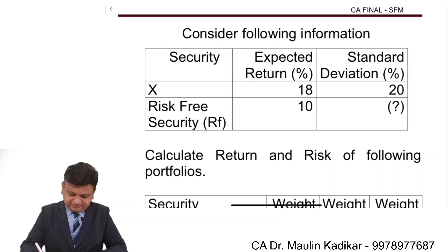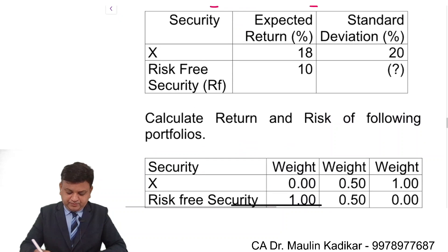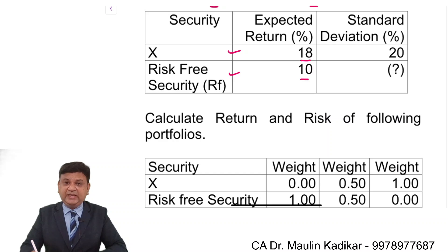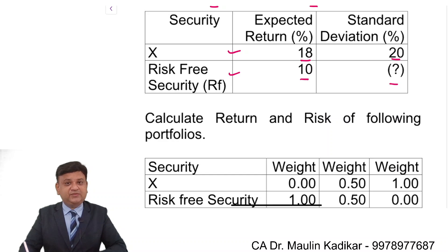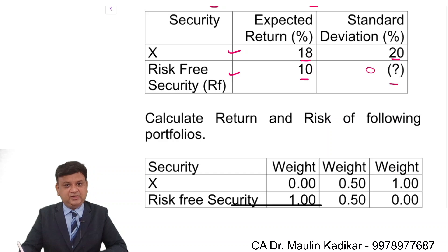Let us see the next question. Consider the following information given about security X and the risk-free rate of return. Returns are provided as 18% and 10%. Standard deviation is given for X but not for the risk-free security, and we know that the standard deviation of the risk-free security is 0 unless specified otherwise.